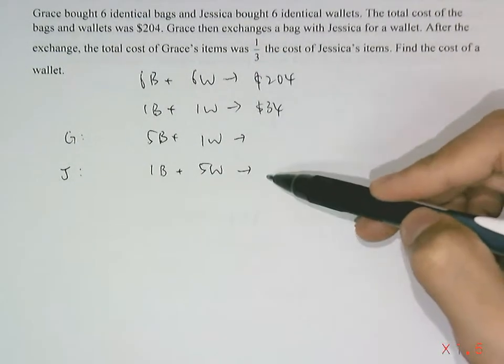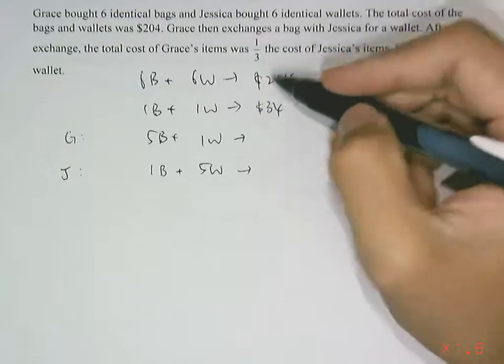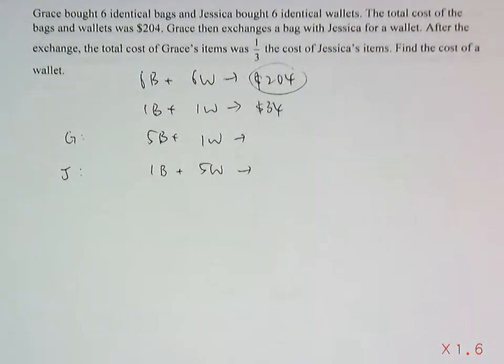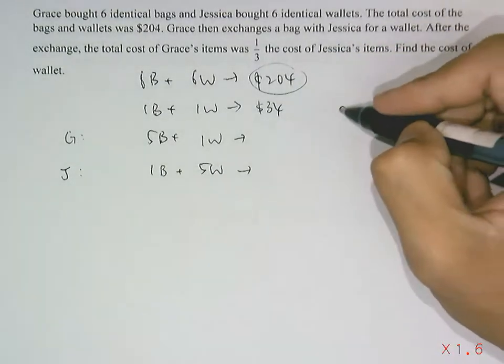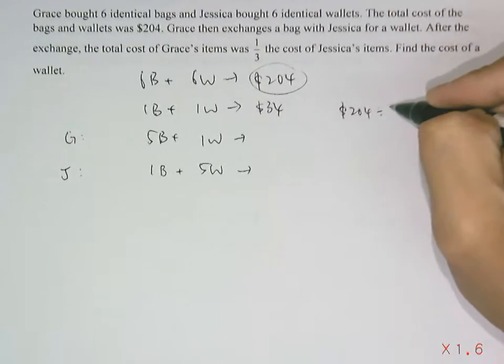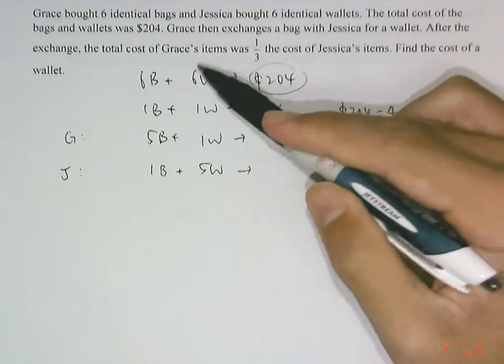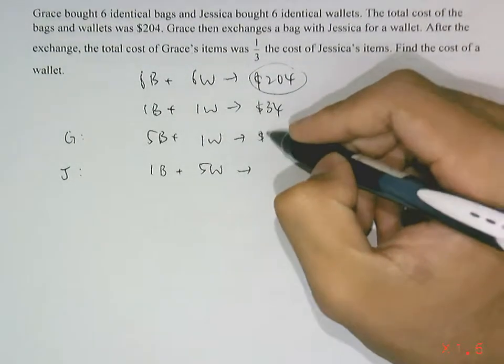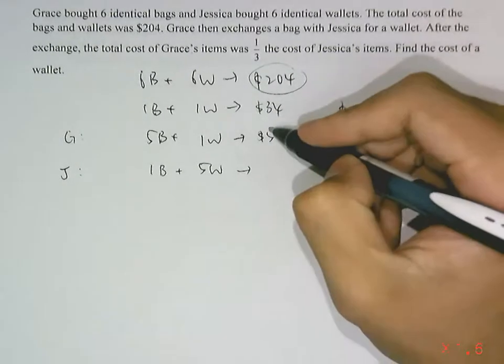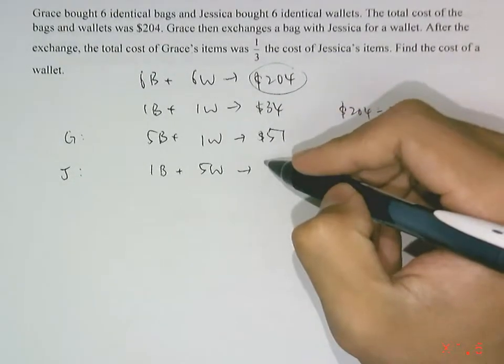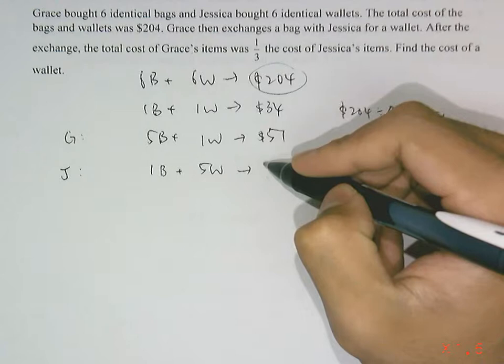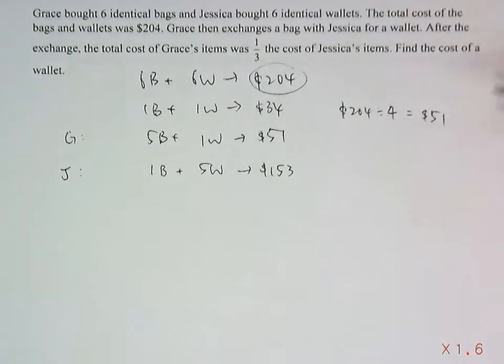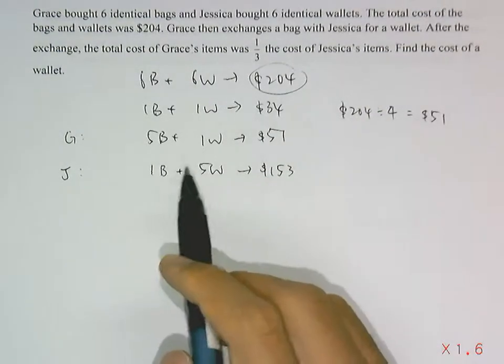Since Grace's items was one-third of Jessica's items, we know that the total cost did not change and it's still $204. So if you take $204 and divide by 4 (since Grace was 1 part and Jessica is 3 parts), we would have $51, which would be Grace's items for the total cost, and that means the remaining three-quarters would be $153 for Jessica.